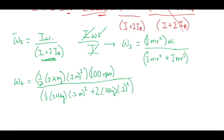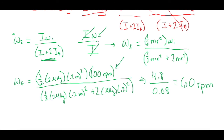When we plug everything in, the numerator comes out to 4.8 and the denominator comes out to 0.08. So 4.8 divided by 0.08 gives us 60 RPM. Since we put RPM in, the equation spits out RPM, and 60 RPM is our final answer.